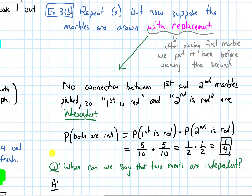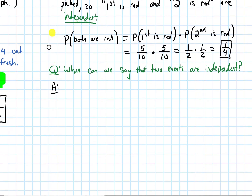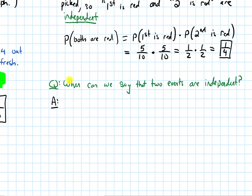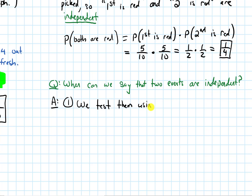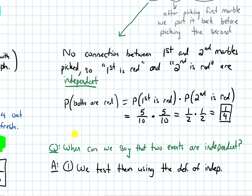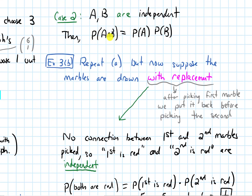To end this video, the question is: when can we say that two events are independent? There are three ways. The first is we test them using the definition of independence — the probability of A intersected with B must equal the probability of A times the probability of B. We work out the probabilities on both sides and check that they're equal.